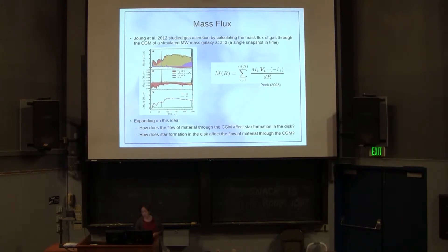The mass flux idea was inspired by the work of Jung et al., who looked at the gas accretion through spherical shells in the halo of a simulated Milky Way mass galaxy at a single snapshot in time, basically redshift zero. They looked at m dot as a function of radius for all gas in different temperature bins and gas in different metallicity bins. The mass accretion rate was calculated using this equation, which is only looking at the radial component of inflow and outflow.